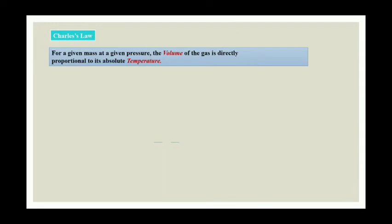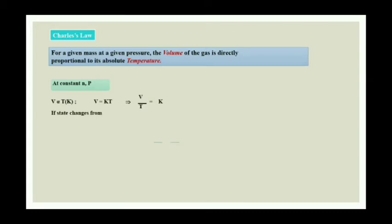Another definition of Charles' law: for a given mass of gas at a given pressure, the volume is directly proportional to absolute temperature. So at constant mass and constant pressure, V is equal to KT, meaning V/T becomes a constant. If a state changes from state 1 to state 2, we can write V1/T1 = V2/T2. This is the important equation of Charles' law.